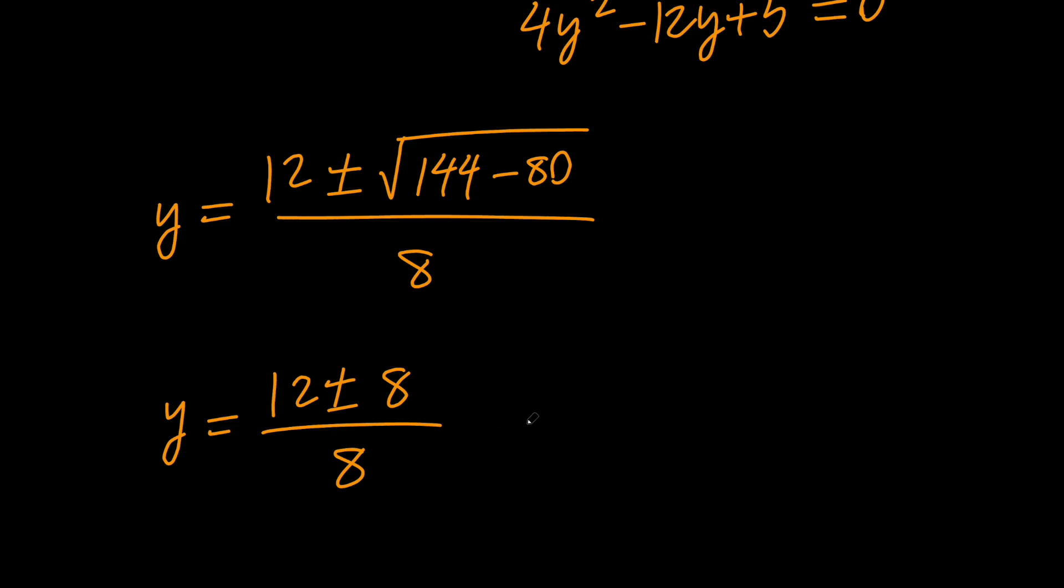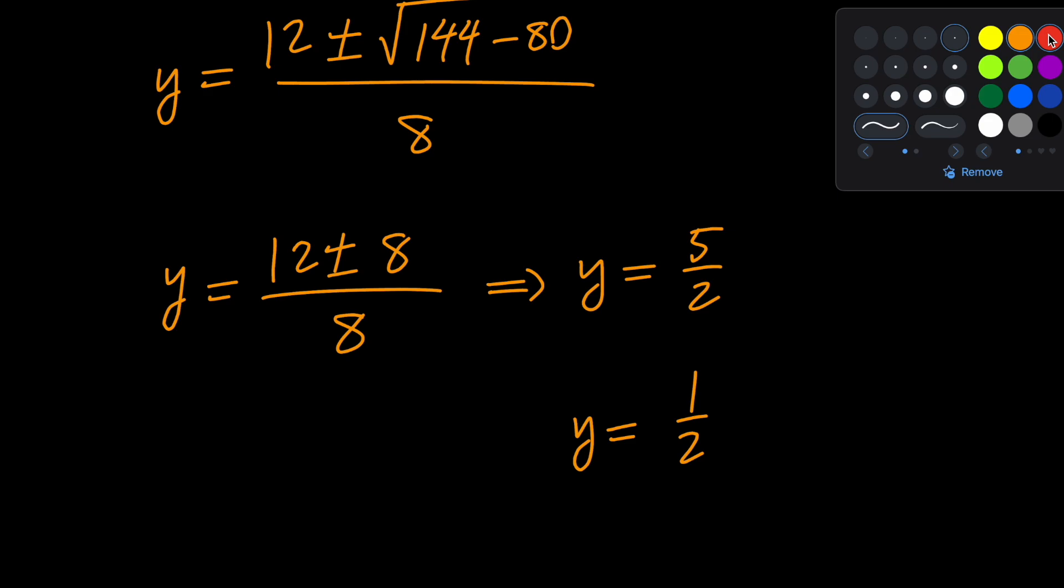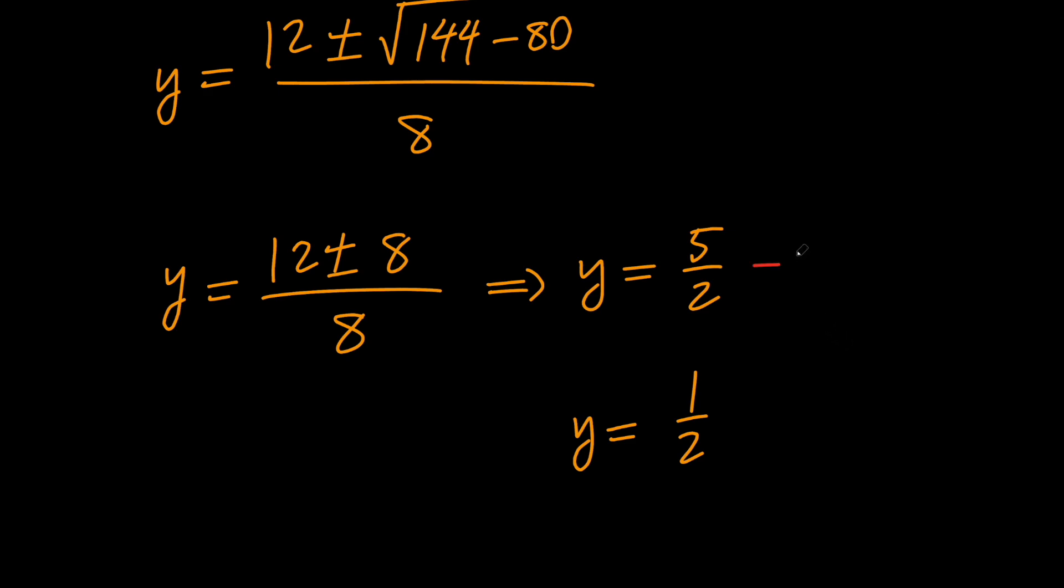This means that y is either equal to 5 over 2, or it is equal to 1 over 2. And notice that x plus y is equal to 3. Therefore, if y equals 5 over 2, we can say that x is equal to 1 over 2. And if y equals 1 over 2, we can say that x equals 5 over 2.